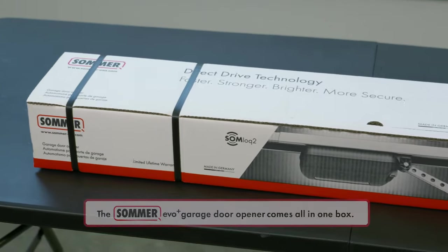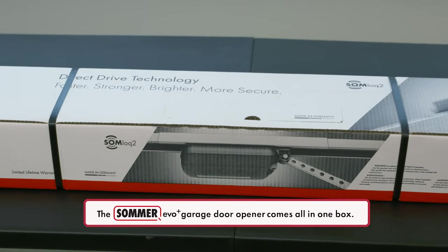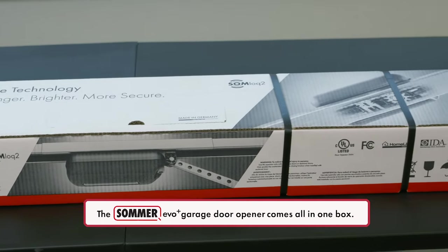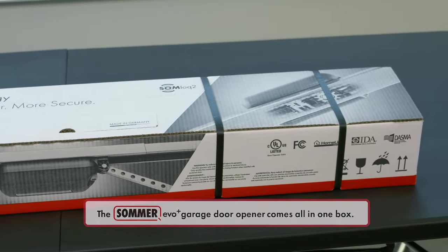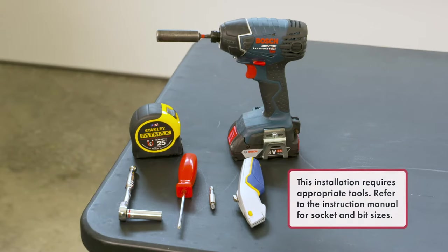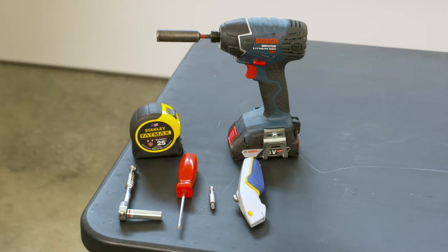The Summer EVO Plus garage door opener comes all in one box, which makes it convenient for shipping and handling. This installation requires appropriate tools. Refer to the instruction manual for socket and bit sizes.